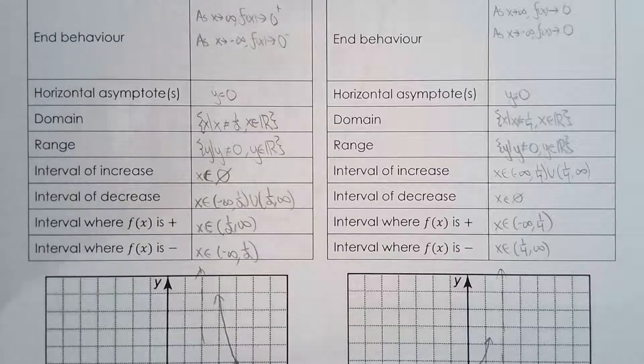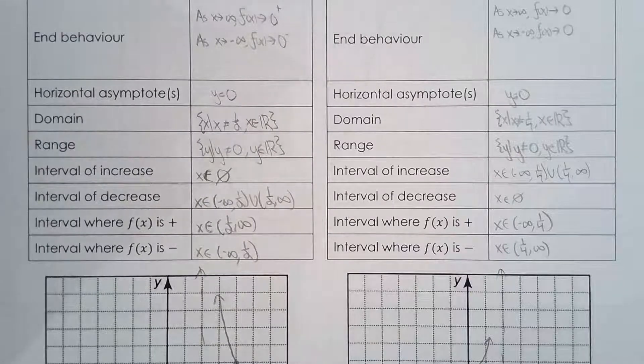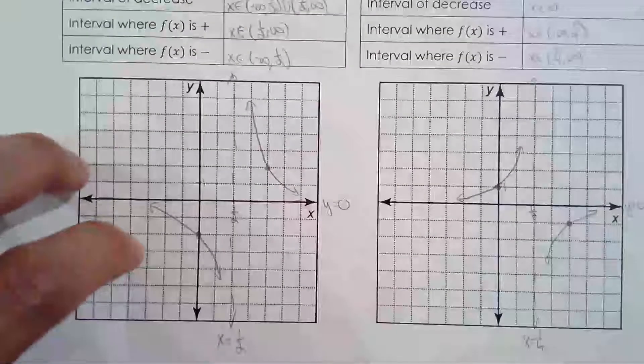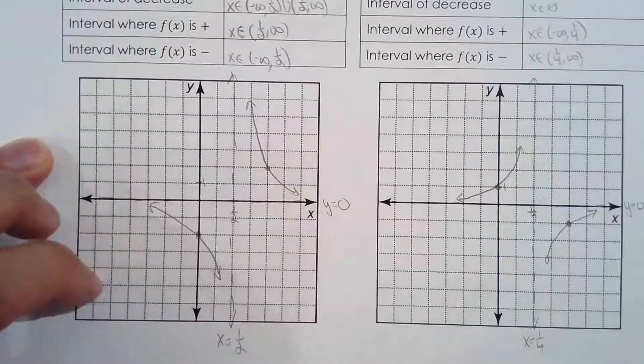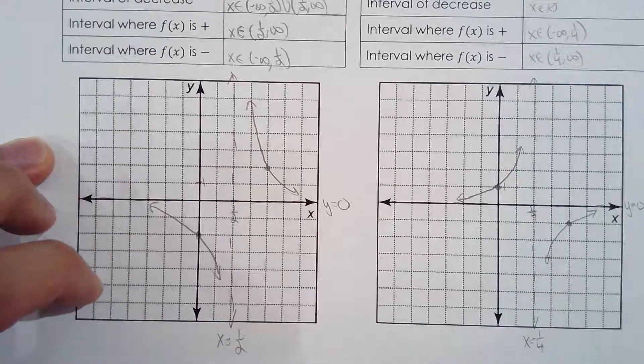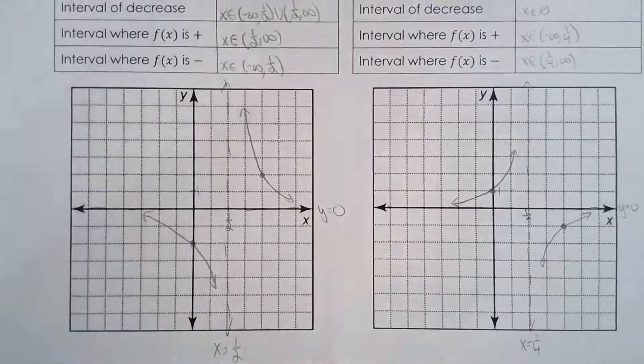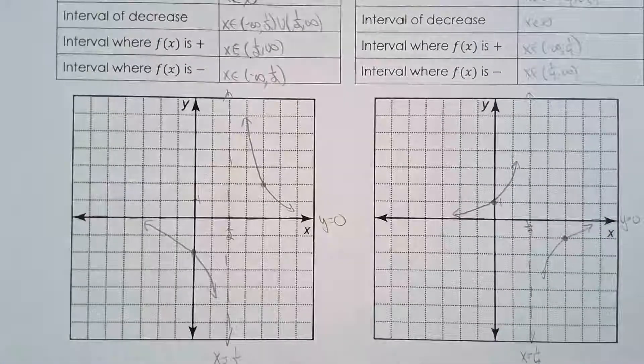There's really just one correct graph. So knowing that, I can piece it together. It's like a little jigsaw puzzle. Hopefully your answers match up and we'll move on to reciprocal of quadratic functions.